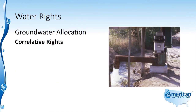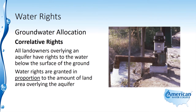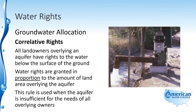Under the correlative rights doctrine, all landowners overlying an aquifer have rights to the water below the surface of the ground. Water rights are granted in proportion to the amount of land area overlying the aquifer, so the water within the aquifer is divided amongst the overlying landowners proportionally. This rule is used when the aquifer is insufficient for the needs of all overlying landowners.